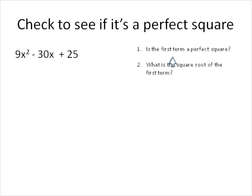The first question: is the first term a perfect square? So is 9x² a perfect square? And if so, what is the square root of that term? 9x² is a perfect square — it's the same as 3x times 3x. So the square root of that is 3x, as shown over here on the right. And it is a perfect square.